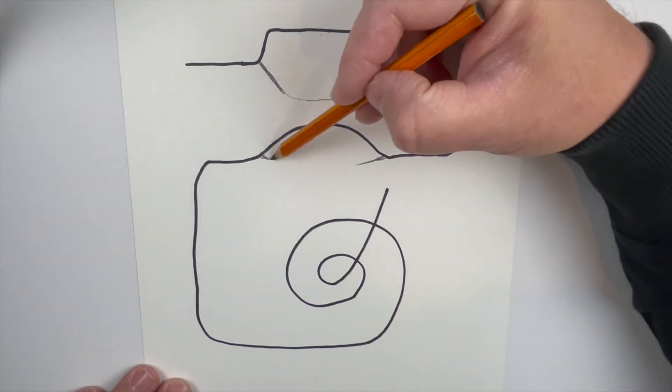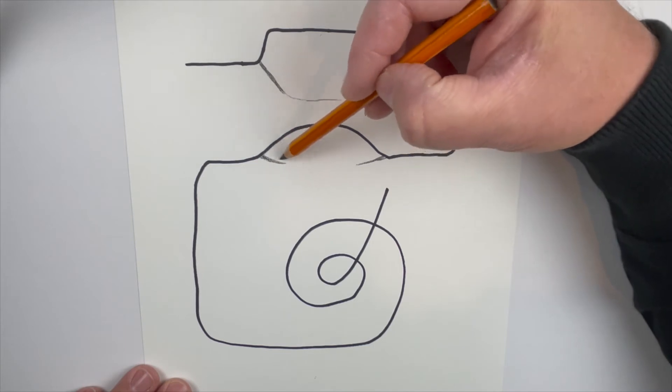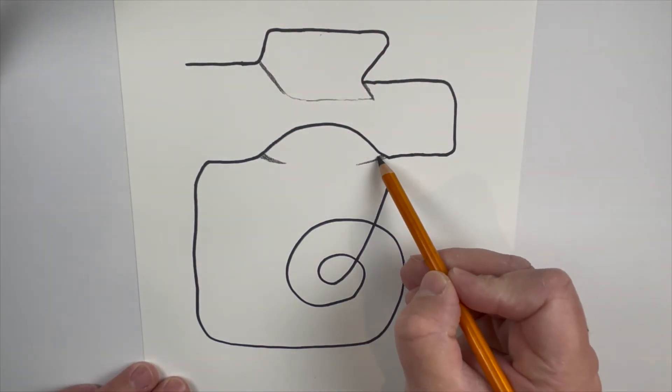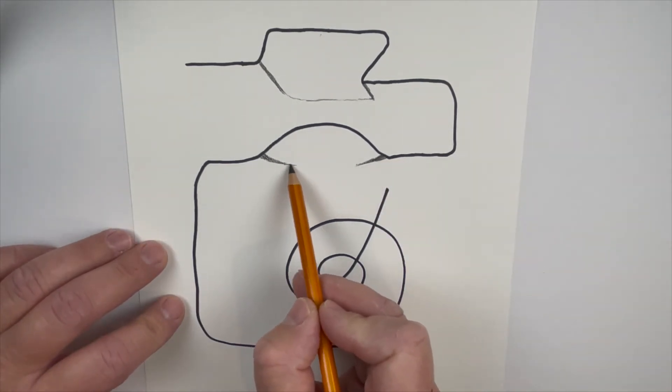And then before we get done guys, I'm gonna show you how I smudge it a little bit, just to really tighten those up really nicely. Because you know, you look at shadows, none of them are perfect, right? They're a little bit darker, a little bit lighter. That's what really makes it pop off the paper.